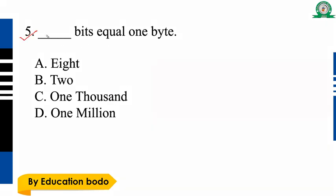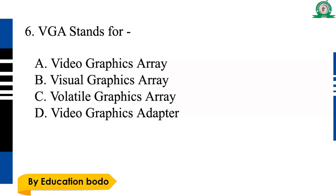Question number five: 1 byte is equal to how many bits? Option A is the right answer — 8 bits equals 1 byte. Option A is the right answer.